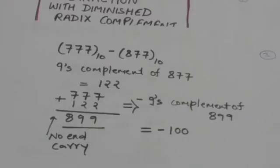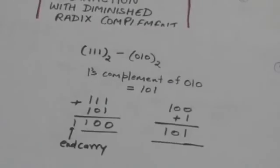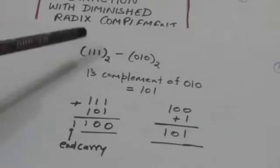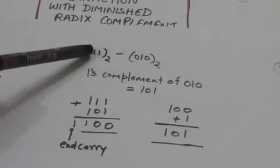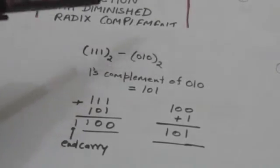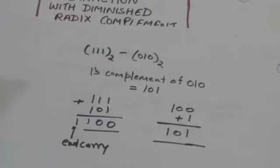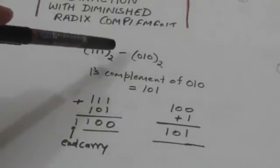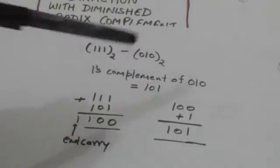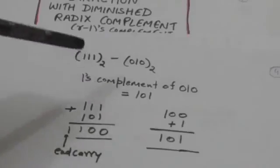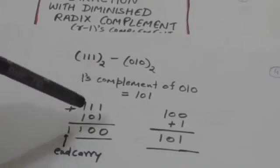Now look at these two binary numbers. We know the base of binary numbers is 2. One number is 111 and the other is 010. We have to subtract 010 from 111. First we will find the 1's complement of 010, which is 101. Then we will find the sum of 111 and 101.